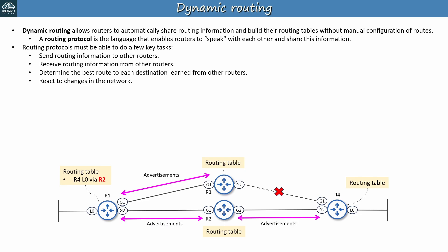So those are the key tasks that each routing protocol must be able to perform: sharing routing information with other routers, determining the best route to each destination, and reacting to changes in the network. Each protocol has different methods for performing these tasks — every protocol has its own message types, metrics, and algorithms, and for the rest of this video we'll focus on those differences.